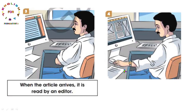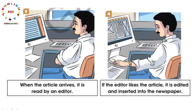الصورة الرابعة: if the editor likes the article - هذه مبني للمعلوم لأن فيها فاعل وفعل ومفعول به. it is edited and inserted into the newspaper - يصحح ويدرج في الصحيفة، وهذه مبني للمجهول. it تعود على article وهو المفعول به الذي استخدمنا ضميره في بداية الجملة.